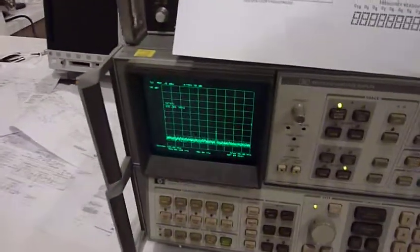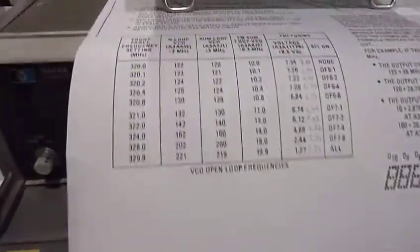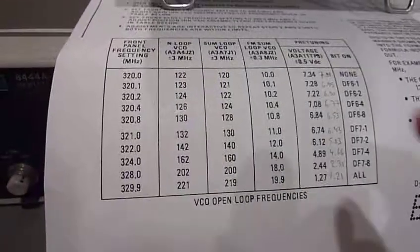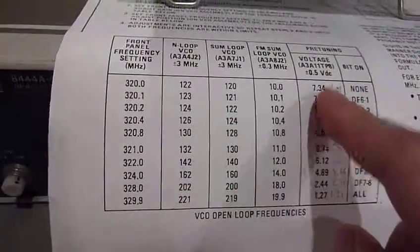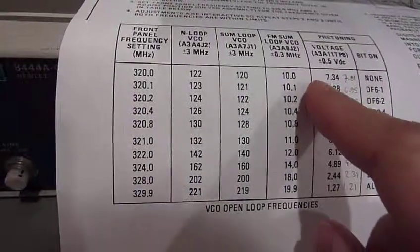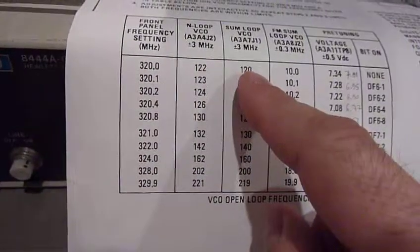So I have put myself over here, and I printed this table as I had before. When I was checking the voltage or the pre-tune, now I can check the sum loop free running VCO. So when I am at 320 indicated, which is what it is here, I should be at 120 MHz.